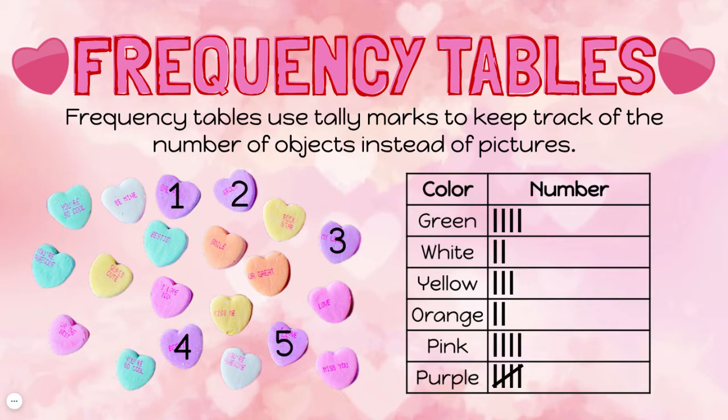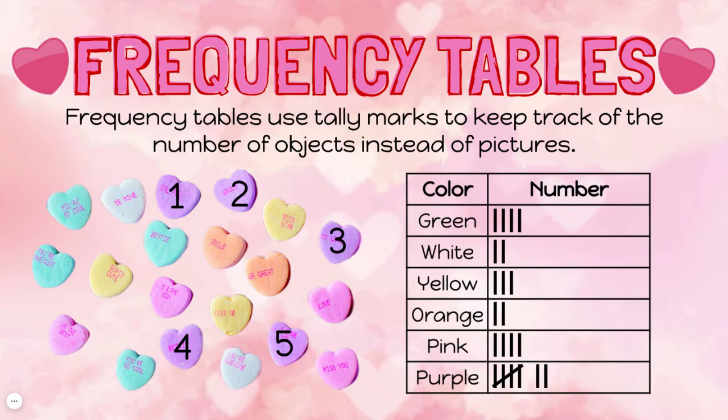This makes tally marks easier to count. Now if I had more than five purple hearts — let's say I had seven — I would then start a new group with my tally marks like this. But I only have five.